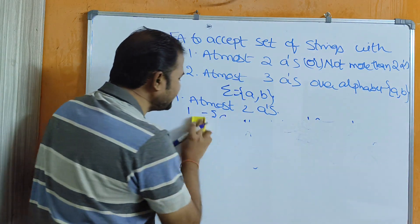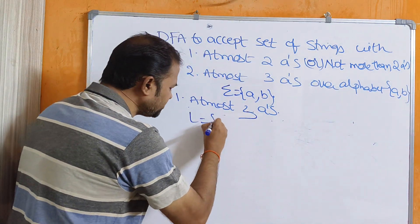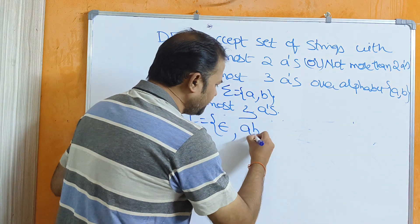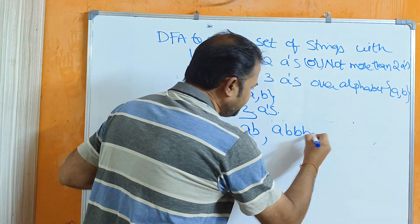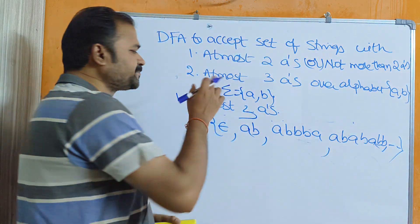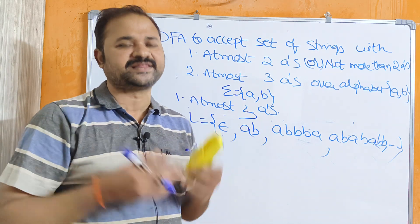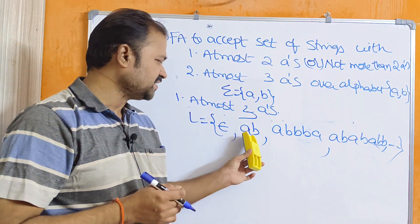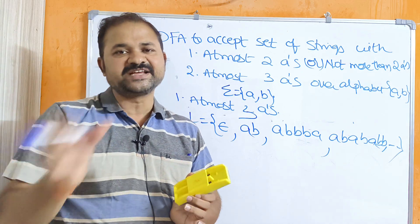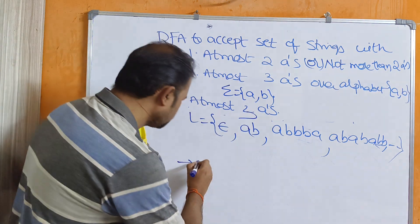Now let us draw the DFA for at most 3 A's. At most 3 A's means the maximum is 3 A's. The valid strings include epsilon (0 A's), strings with 1 A, strings with 2 A's, and strings with 3 A's. If we have more than 3 A's, the string is rejected. Since at most 3 A's, we require 4 states: Q0, Q1, Q2, and Q3.